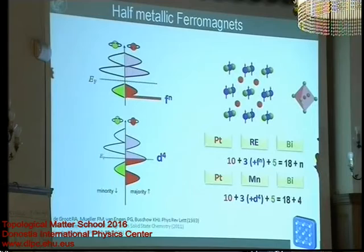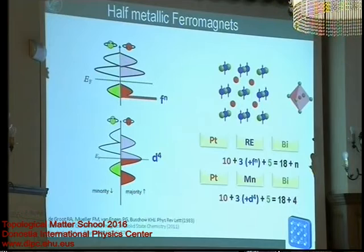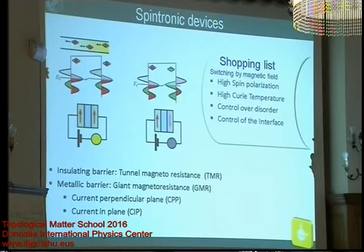The currents needed to switch the free layer are still high, but in the case of a topological insulator, the currents become much smaller, because a spin-polarized current is generated that is even larger than the number of charge carriers — it's really very efficient. This is why spintronics is very interesting now, with these spin Hall effect based MRAM devices to store data as zero and one.